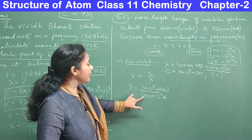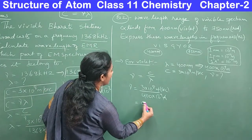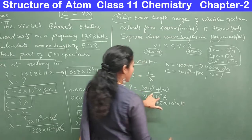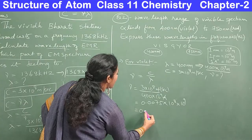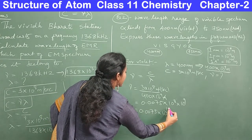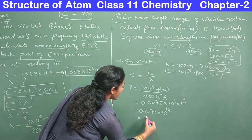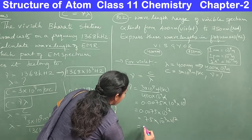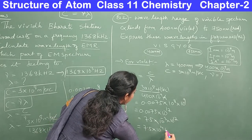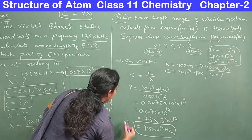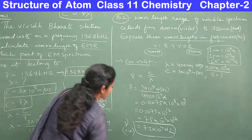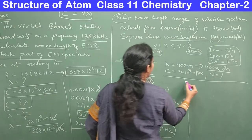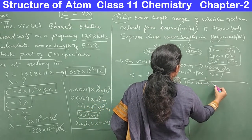Meters cancel, giving the answer in per second (hertz). Calculating: 3÷400 ≈ 0.0075, and 10⁸×10⁹ = 10¹⁷, so ν = 0.0075×10¹⁷ = 7.5×10⁻³×10¹⁷ = 7.5×10¹⁴ Hz. The frequency of violet light is 7.5×10¹⁴ Hz.